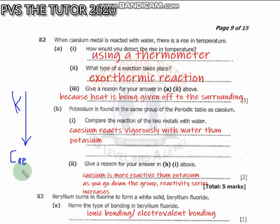As a result, calcium is more reactive. Since calcium is more reactive, it's going to react vigorously with water than potassium itself. Calcium is more reactive than potassium - as you go down the group, reactivity series increases.